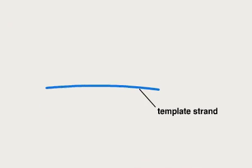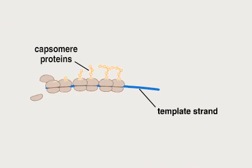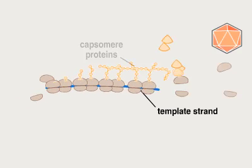These template strands, which are in the form of messenger RNA, can now be translated into capsomere proteins used to assemble new viral capsids.